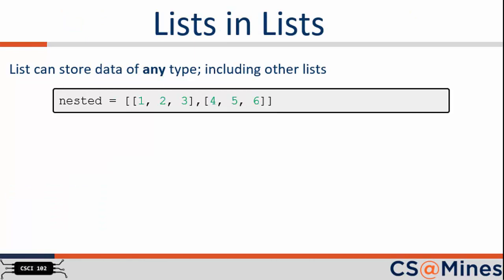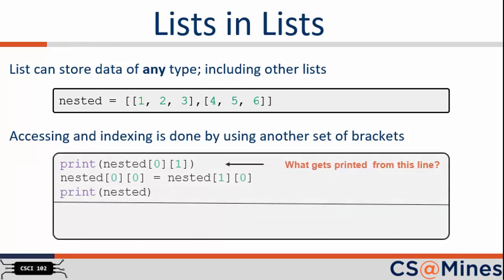As we mentioned in a previous Python video, lists can store data of any type, including other lists. See the line of code on the screen as an example of a list containing two lists. The obvious question is then, how do we access the value in this list, for example, the number 4? Accessing and indexing is not too hard. You just need another set of brackets. As shown on the slide, take a look at the code snippet. What do you think will be printed? We'll give you a second to think about this.